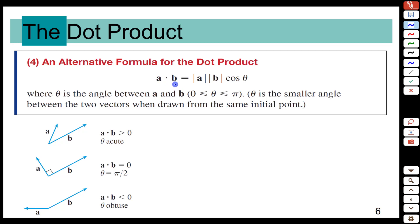In this video we'll look at an alternative definition of the dot product, and that is one based on the magnitude of the two vectors involved.